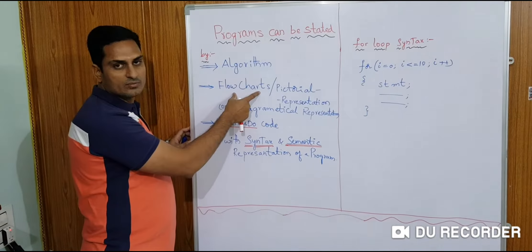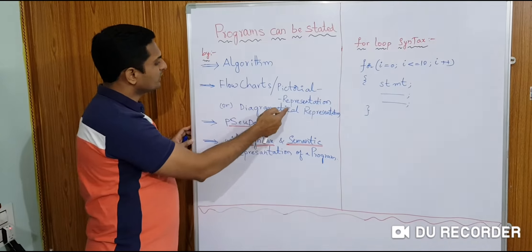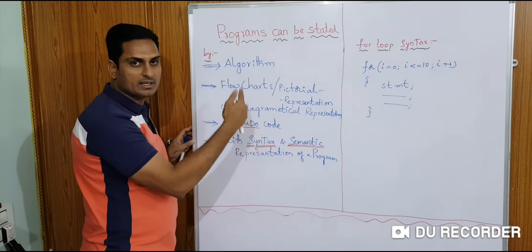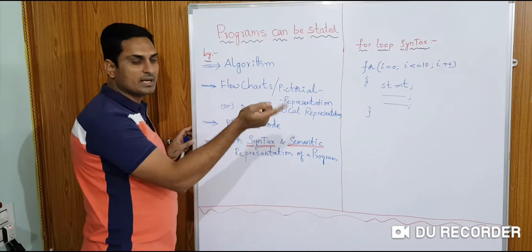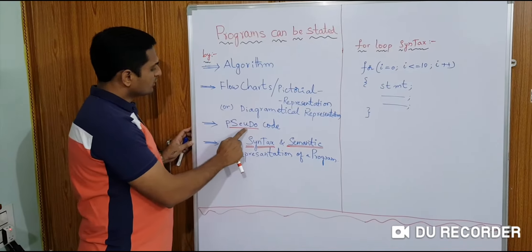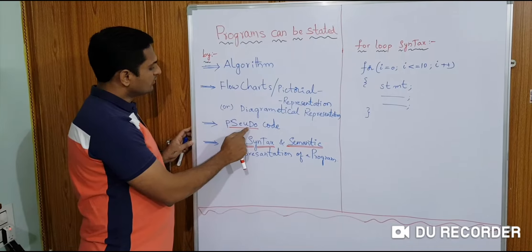Flowcharts means pictorial, diagrammatical representation of a program. Next, pseudocode. Pseudocode means how many for loops we are using, how many if conditions we are using — we will mention that in English.